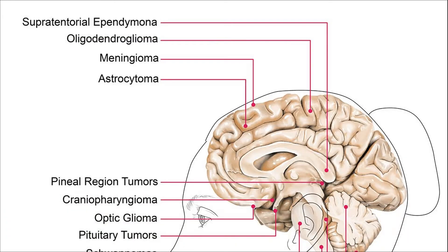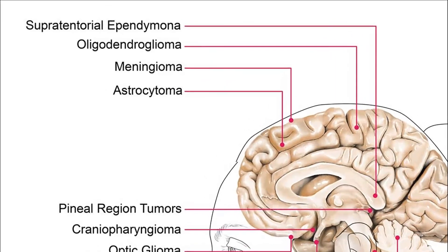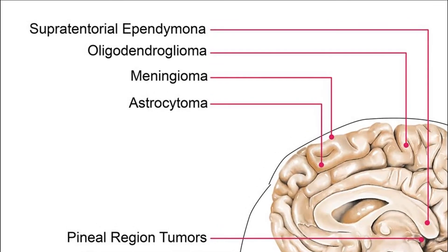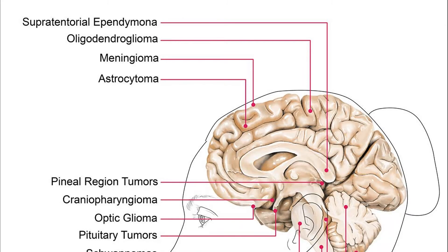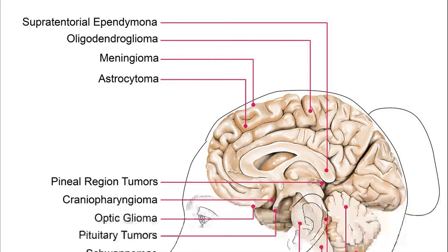Now let us look at the supratentorial primary tumours. You have the supratentorial ependymoma, then oligodendroglioma, meningioma, and astrocytoma. These are the cells present in the telencephalon. You have the glial cells, which are the astrocytomas; the meninges, which give meningiomas; the oligodendrocytes, or oligodendrogliomas; and the ependymal cells, which give you supratentorial ependymoma.